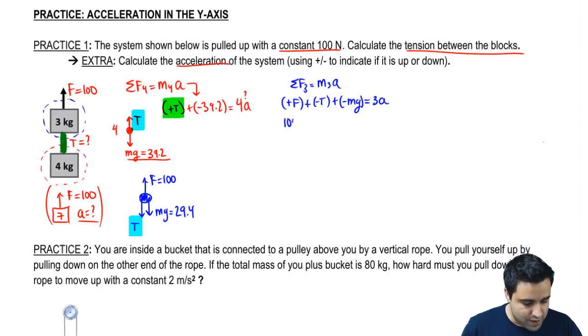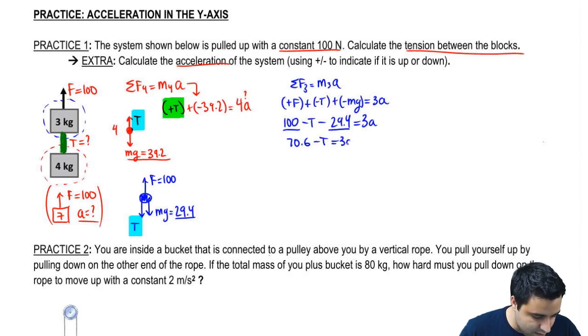And I can plug in these numbers. This is 100 minus T minus mg here is 29.4. And if you combine this, you get that this is 70.6. 70.6 minus T equals 3A. I'm stuck here.